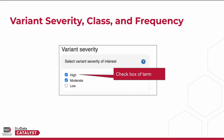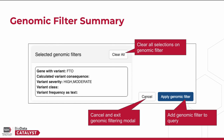To select categories from each of these fields, simply check the box next to the term of interest. As you can see in this example, we have selected high and moderate variant severity. The last field of the genomic filtering modal displays a summary of the genomic filter that was built. In this example, we can see that we have selected the FTO gene variant and filtered to high and moderate severity variants.